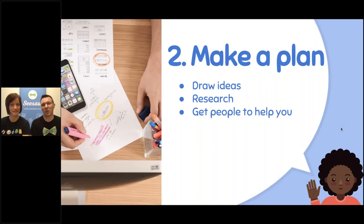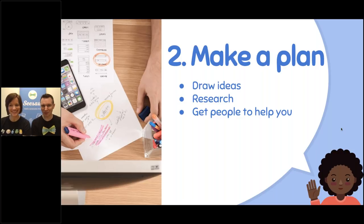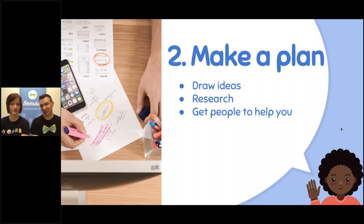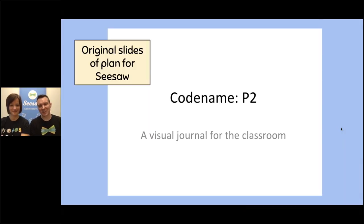Once you've figured out what you'd like to do, you get to do this really fun part that involves using your imagination and learning from the world around you. You can draw ideas and think about all the things you could do — this is really where you get to go a little bit crazy and think about even the wildest stuff. You're trying to come up with great ideas and also look at people around you and ask, can someone help me or can I learn something from them so I have more ideas? This was fun to go back and look at the very early drawings we did for Seesaw.